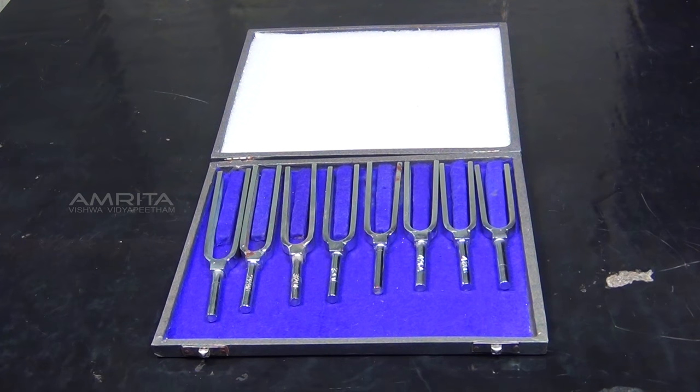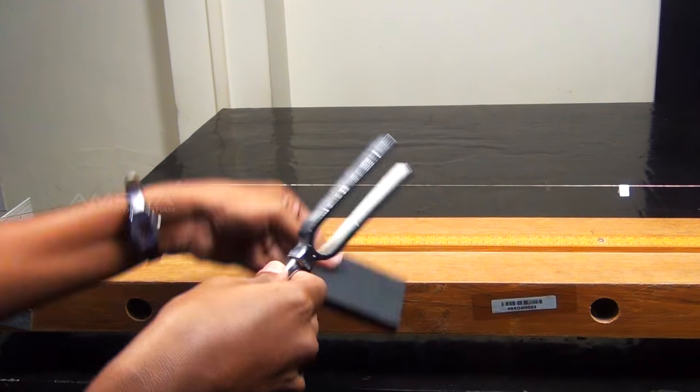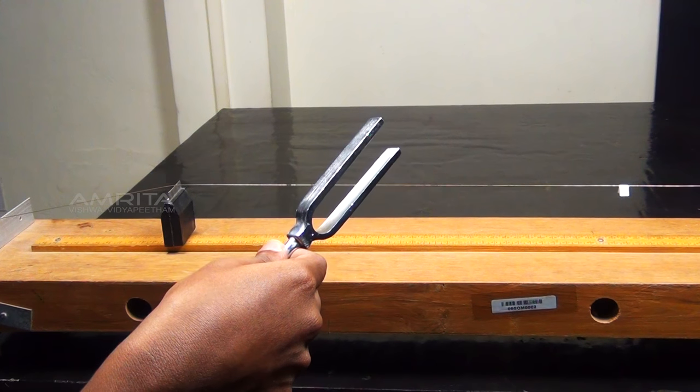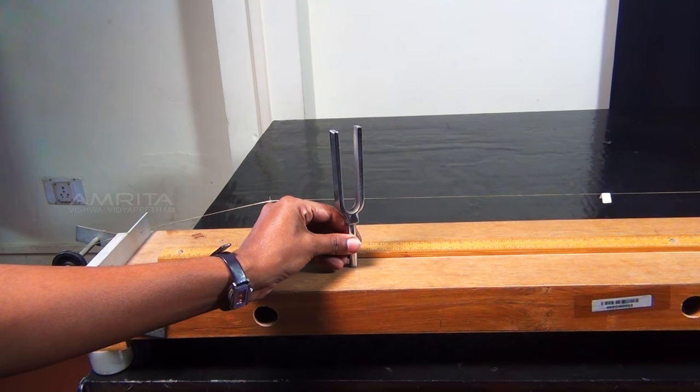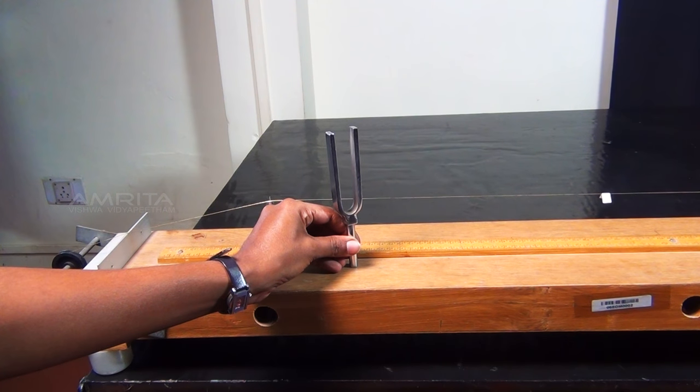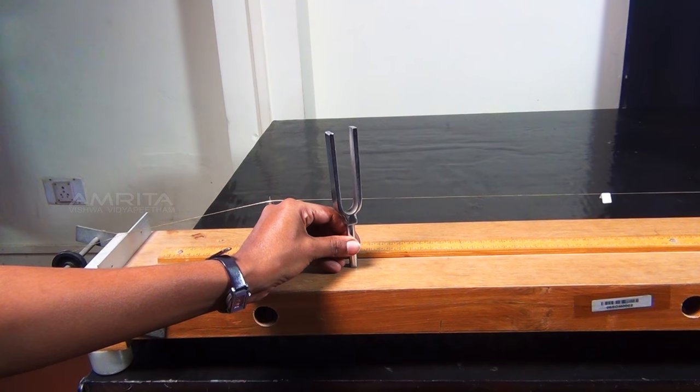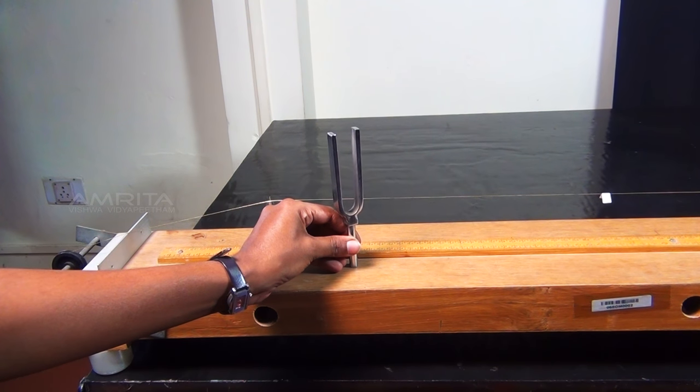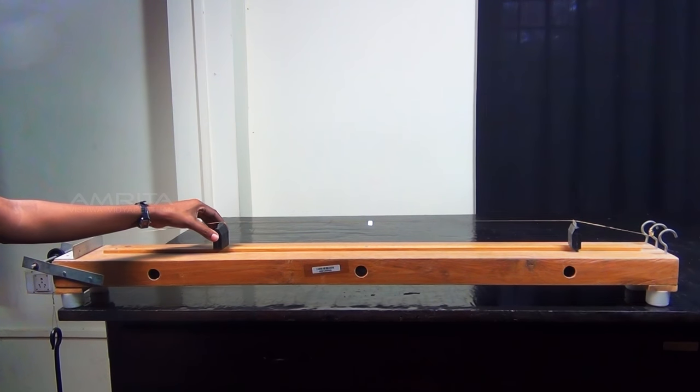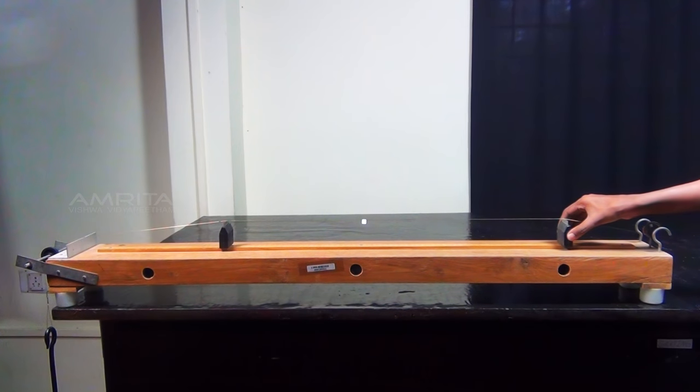Now, take a tuning fork of known frequency. Make it vibrate by striking its prong with a rubber pad. Touch the lower end of the handle of the vibrated tuning fork with the sonometer board. Now, we can see vibrations on the string. Decrease the length of the string by gently adjusting the bridges inwards.